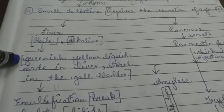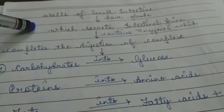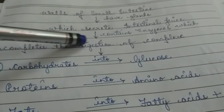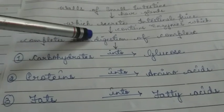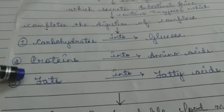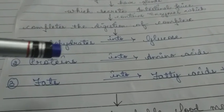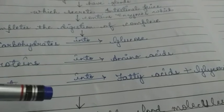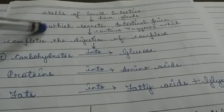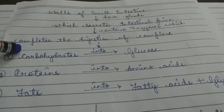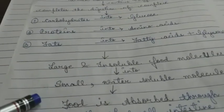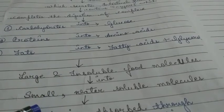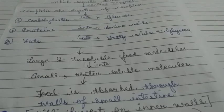The small intestine itself also plays a role in digestion. The glands in the walls of the small intestine secrete intestinal juice containing enzymes that digest carbohydrates, proteins, and fats — converting carbohydrates into glucose, proteins into amino acids, and fats into fatty acids plus glycerol. The small intestine is the place where digestion of food is completed; large and insoluble food molecules are converted into small water-soluble molecules.